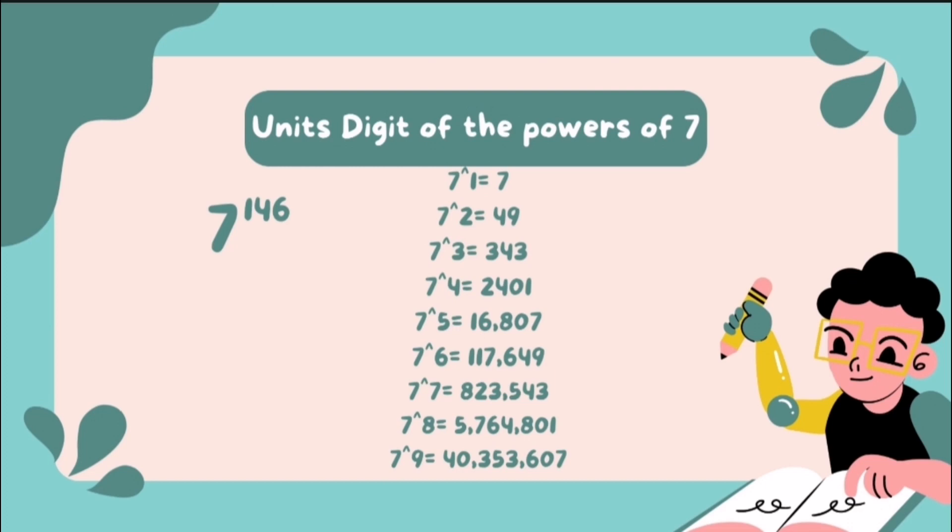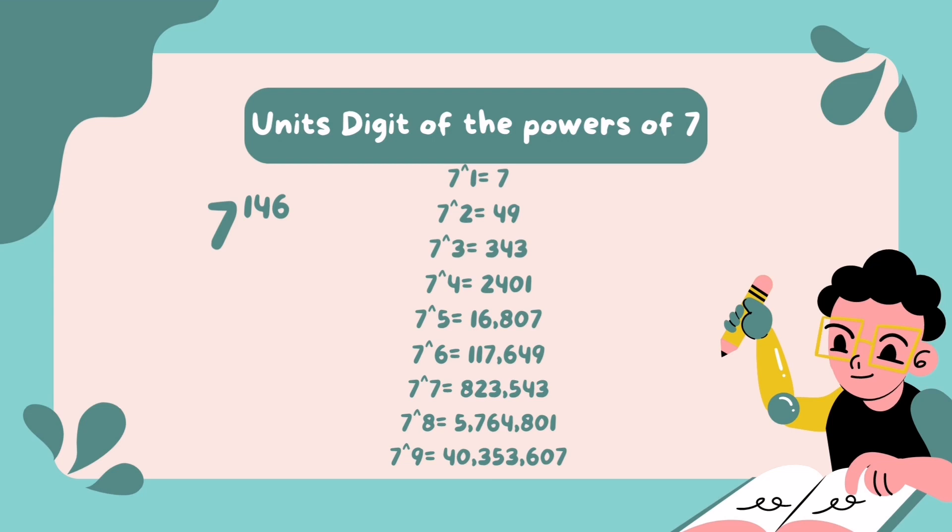7 raised to 5 equals 6,807. 7 raised to 6 equals 117,649. 7 raised to 7 equals 823,543. 7 raised to 8 equals 5,764,801. 7 raised to 9 equals 40,353,607.